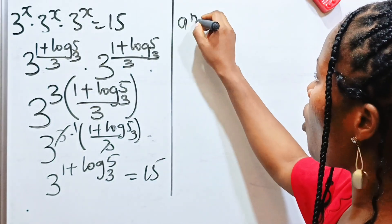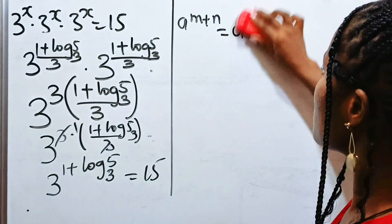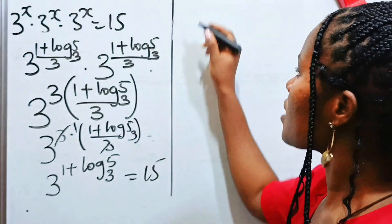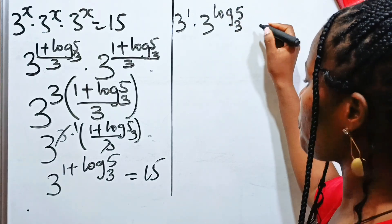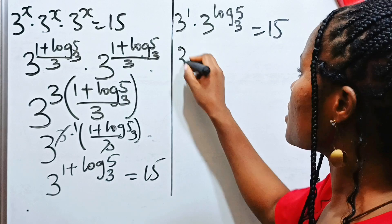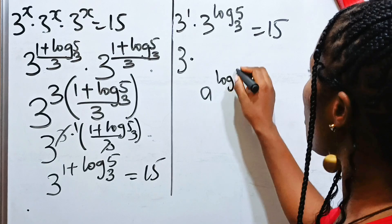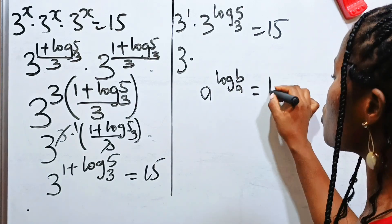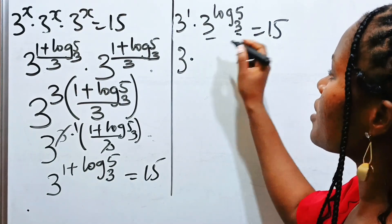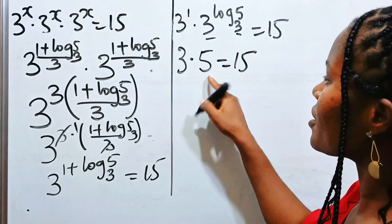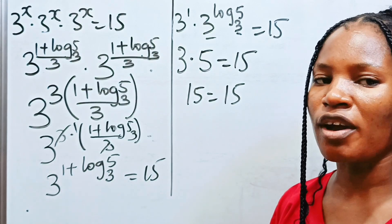Remember that a to the power of m plus n equals a to the power of m multiplied by a to the power of n. So we can write this as 3 to the power of 1 multiplied by 3 to the power of log 5 base 3, equals 15. Now, 3 to the power of 1 is 3, and since a to the power of log b base a equals b, we have 3 multiplied by 5 equals 15. And 15 equals 15 — that proves the answer we got is correct.